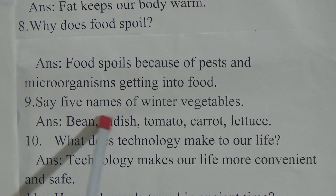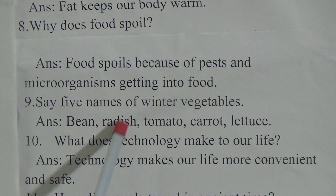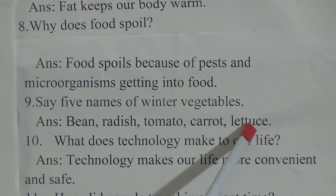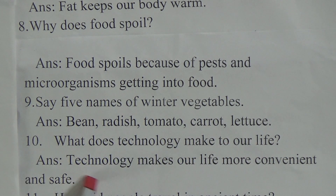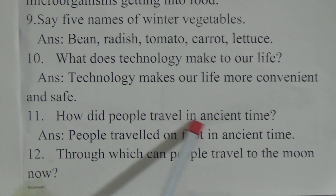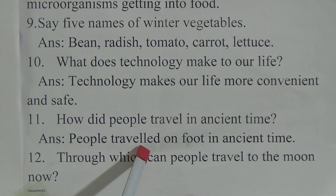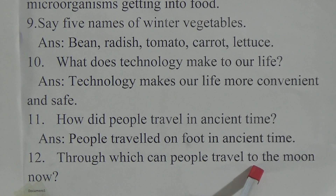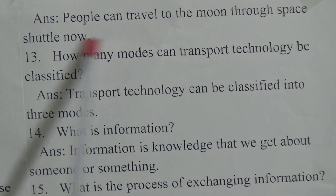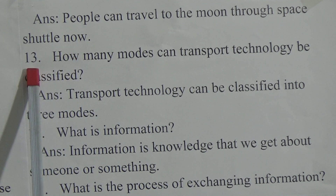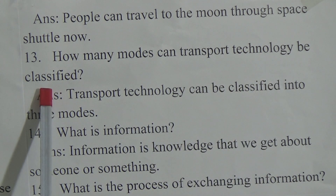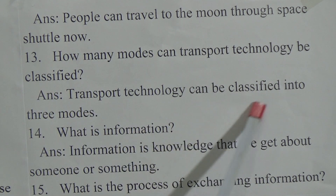Question 9: Give five names of winter vegetables. Answer: Bean, radish, tomato, carrot, and lettuce. Question 10: What does technology make to our life? Answer: Technology makes our life more convenient and safe. Question 11: How did people travel in ancient times? Answer: People traveled on foot in ancient times. Question 12: Through which can people travel to the moon now? Answer: People can travel to the moon through a space shuttle. Question 13: How many modes can transport technology be classified into? Answer: Transport technology can be classified into three modes.